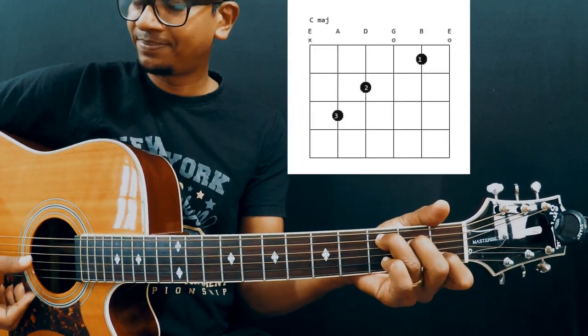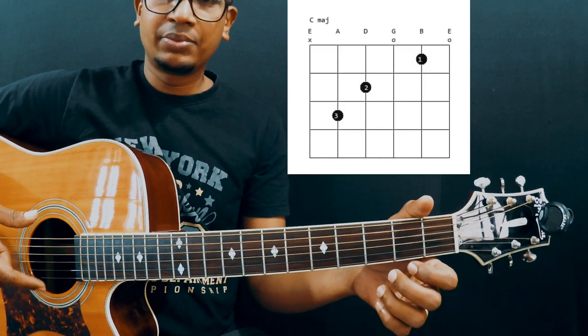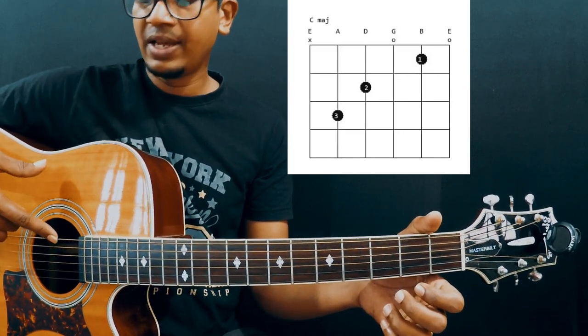Now we're going to learn C major. Strings are numbered in this way: 1, 2, 3, 4, 5 and 6.